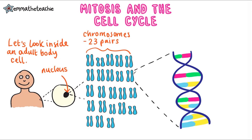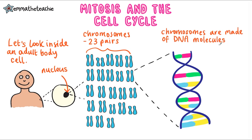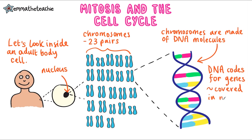If we zoom inside a chromosome we can see that it's actually made up of DNA. This is a molecule of DNA right here. DNA codes for genes. You're going to learn a lot more about this in the inheritance topic in paper 2, but this is all that you need to know for paper 1.